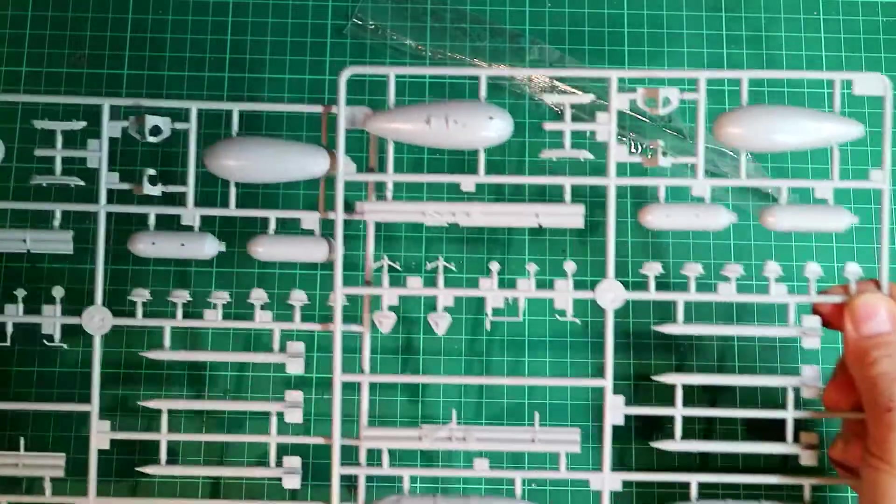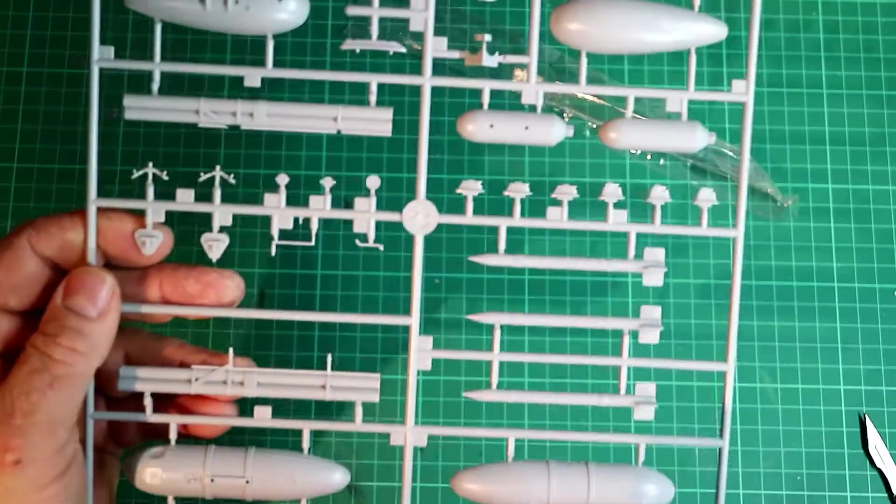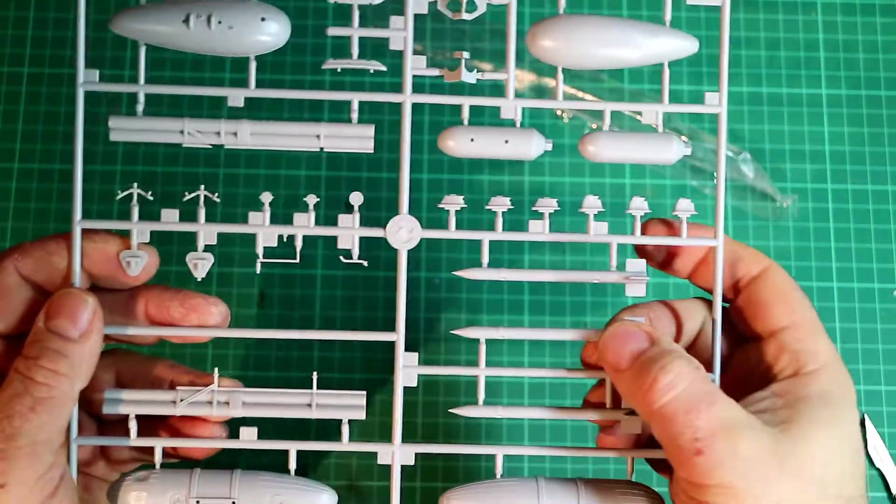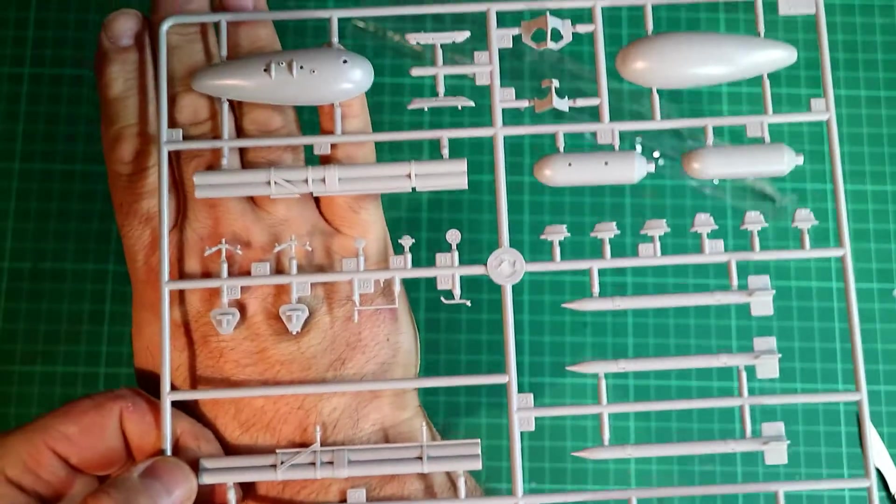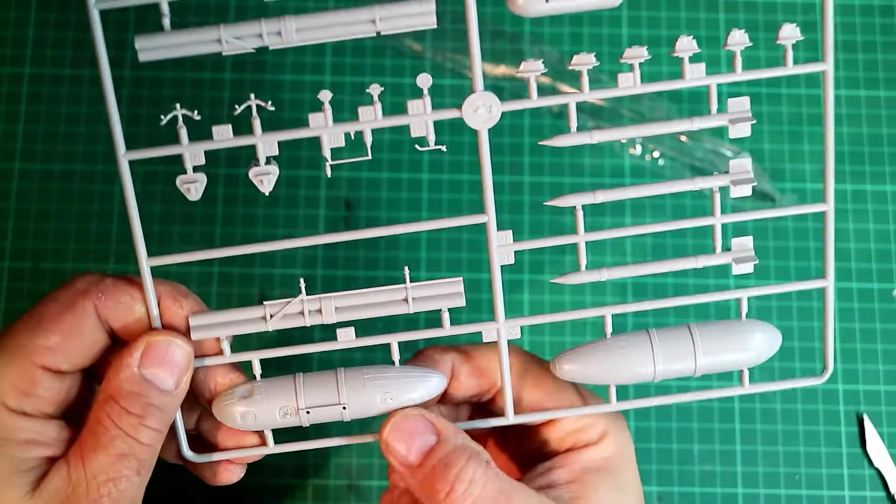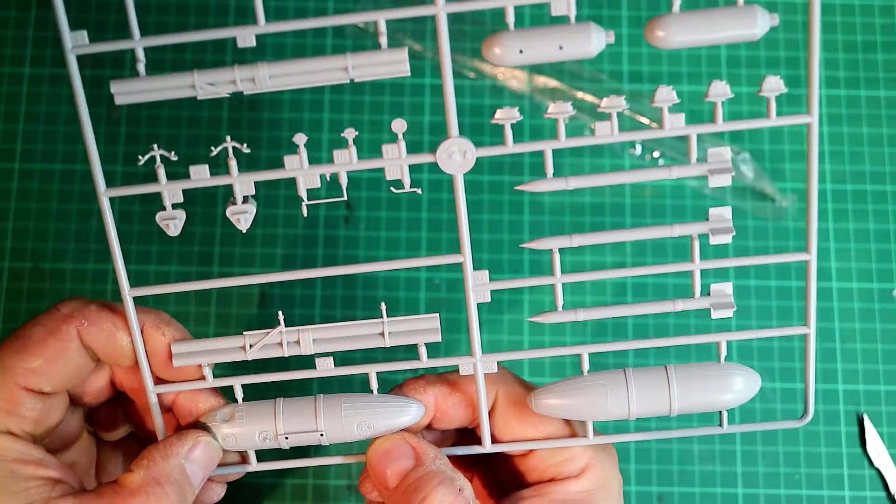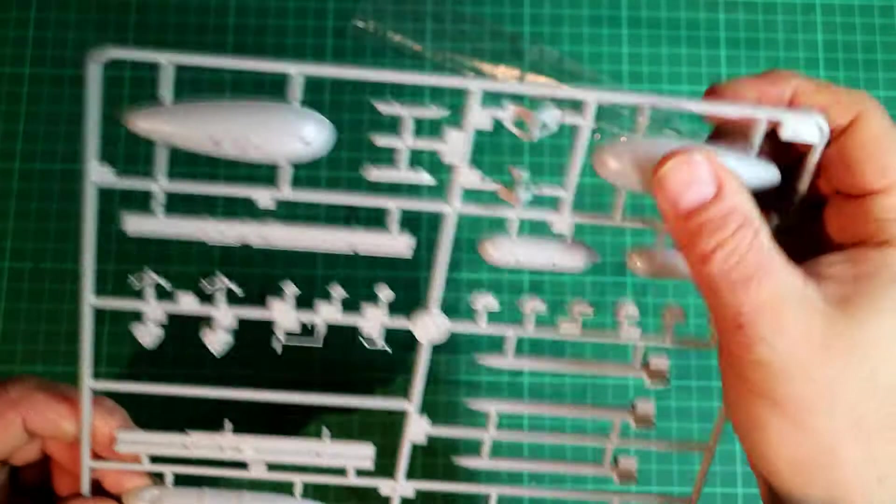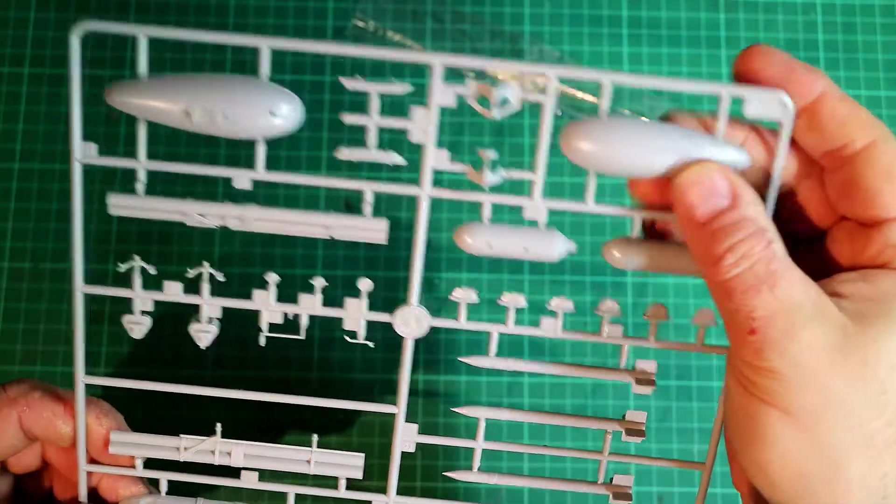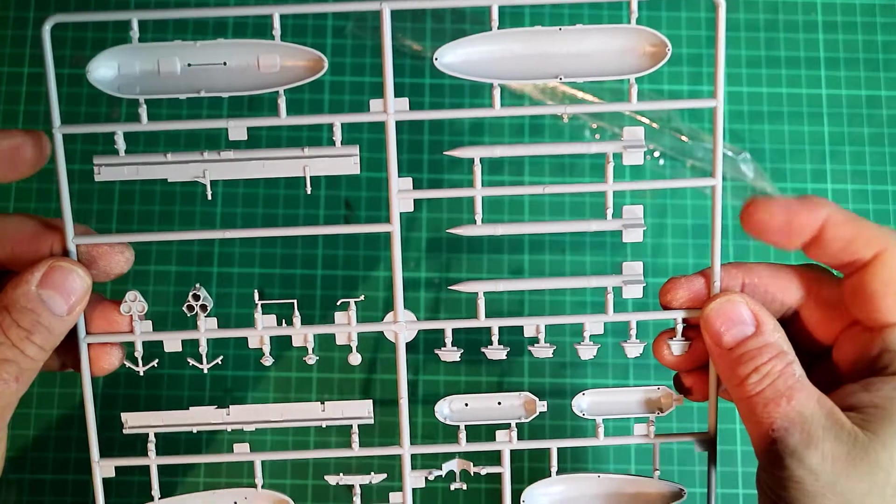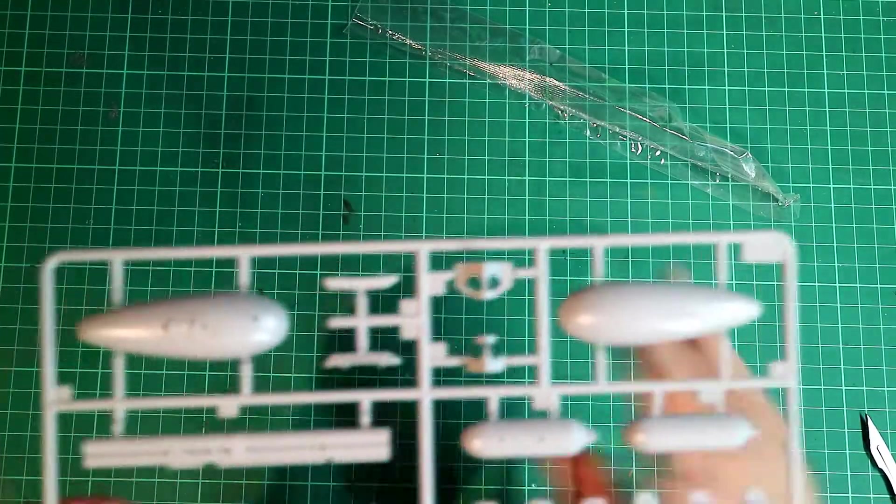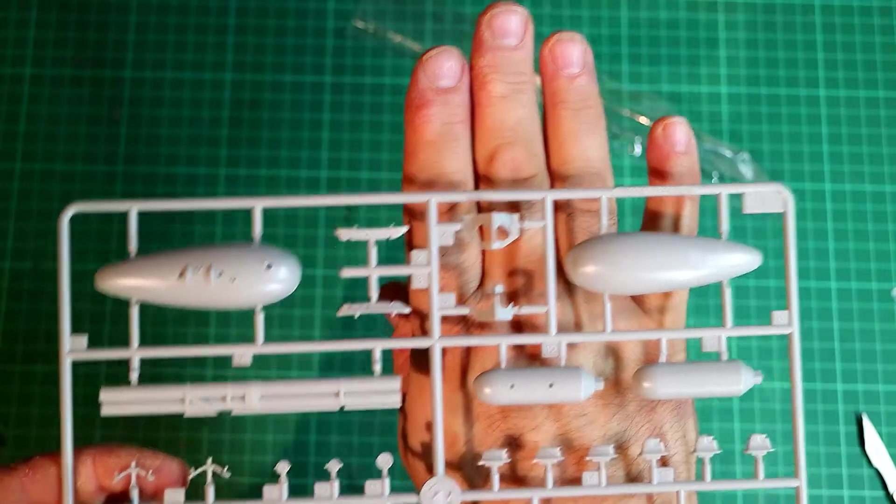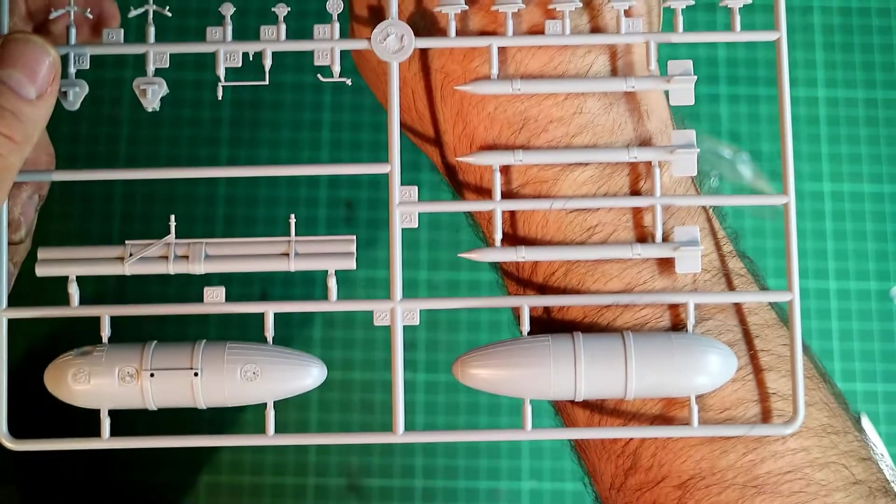These are just two identical sprues containing really the fuel tanks, rockets, rocket pods I believe those are. I'm not really an expert on these things, but you've got two types of tanks. Raised lines on these, which I think is correct for these. Again, it all looks quite nice, really. There's not much to complain about on that sprue. That's good, and that's two of those.